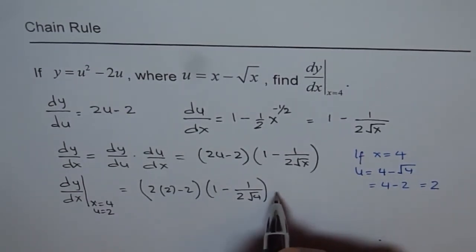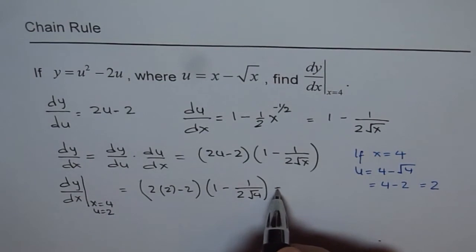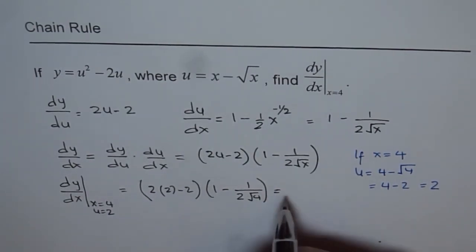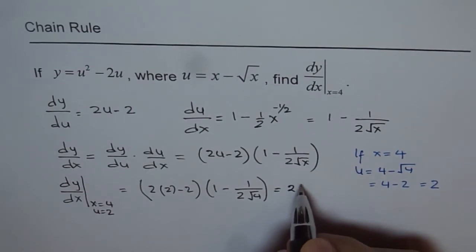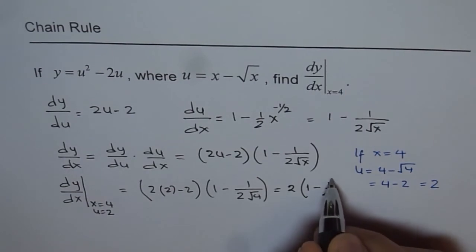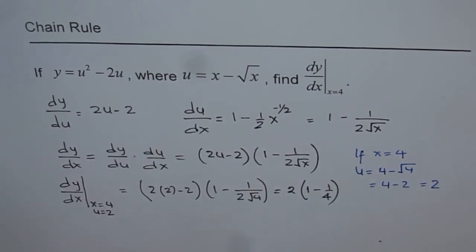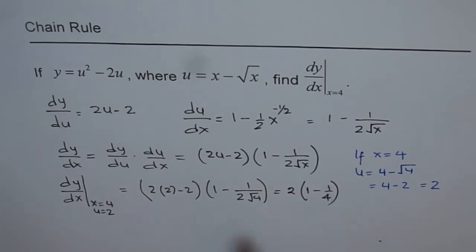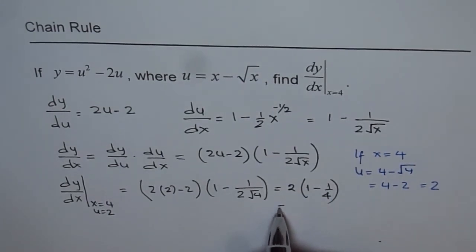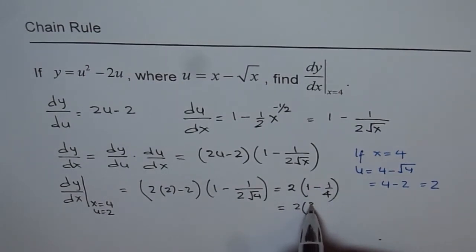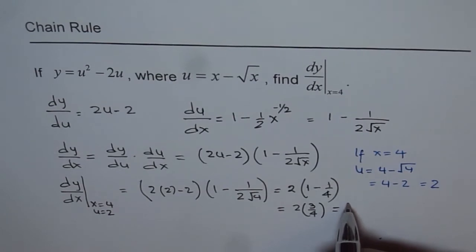From here we get 2 times 2 is 4, and 4 minus 2 is 2. So we have 2 times (1 minus 1 over 4), since the square root of 4 is 2 and 2 times 2 is 4, giving 1 over 4. This equals 2 times 3 over 4, which is 3 over 2.